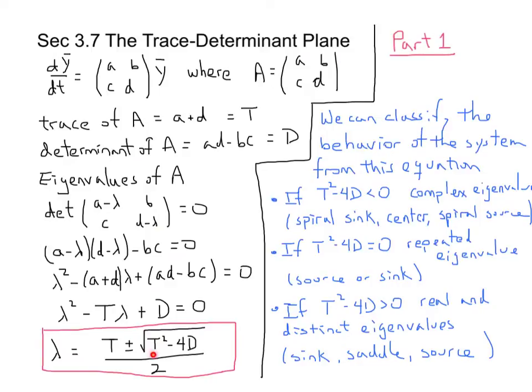So we can begin to classify behaviors quite simply. If the trace squared minus 4 times the determinant is a negative number, we know we're going to be in a situation where we have complex eigenvalues. We're going to be looking at a spiral sink or a center or a spiral source.